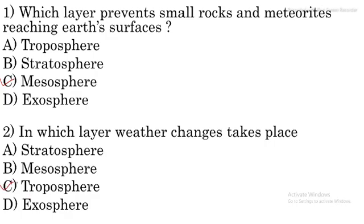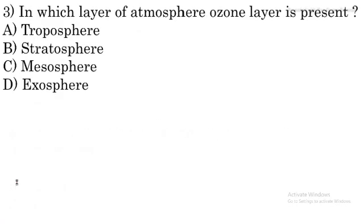Question number 3: in which layer of the atmosphere is the ozone layer present? The ozone layer is present in the stratosphere layer of the atmosphere. Option B is the right option. The function of the ozone layer is to protect us from the ultraviolet radiations of the sun. So stratosphere is the right answer.